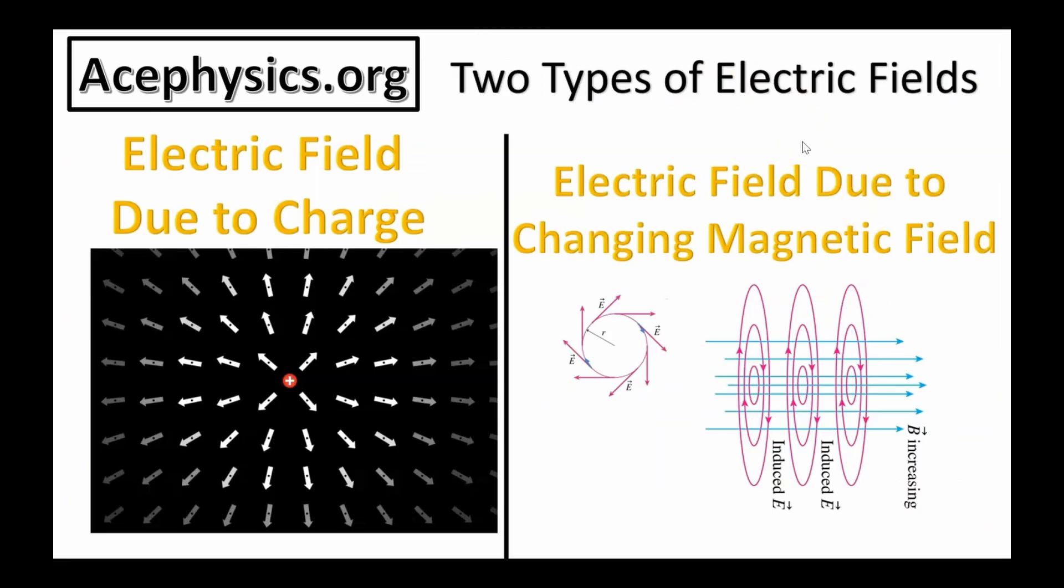Electric fields can be generated in two ways. The first is by charge, as described by Coulomb's Law. This is likely the type you're familiar with, where the field radiates outward from the charge.